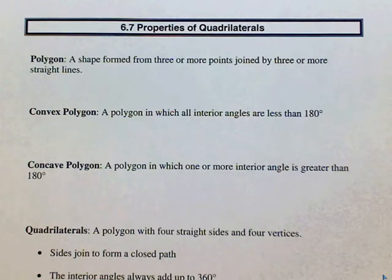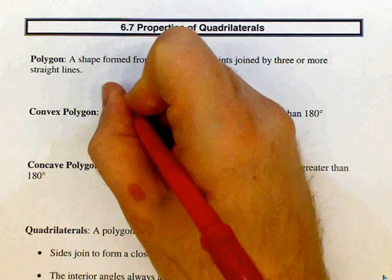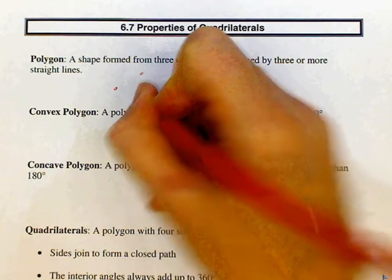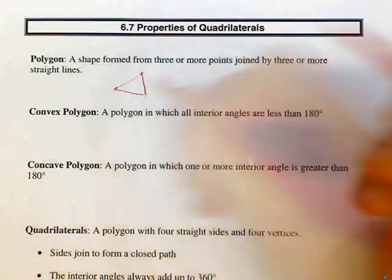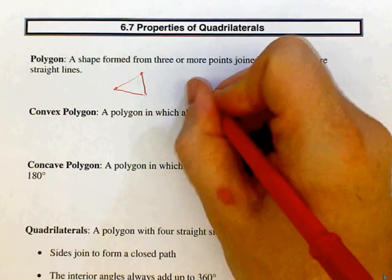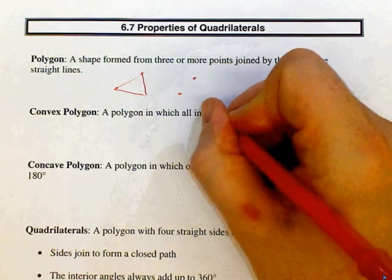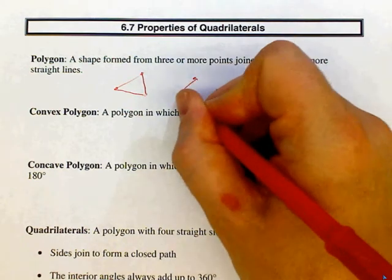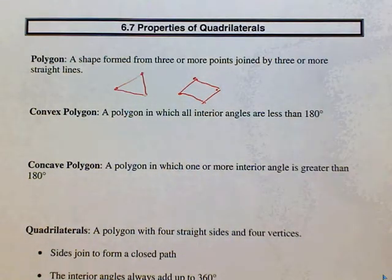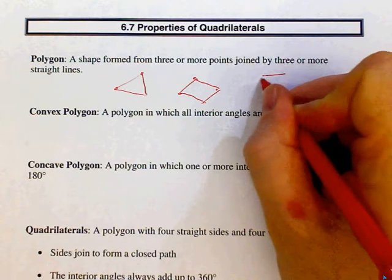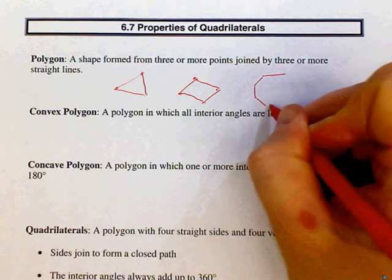So let's throw some examples of a polygon. A triangle, three points, three straight lines, polygon. Square or diamond, polygon. Five sided, six sided, they're all polygons.